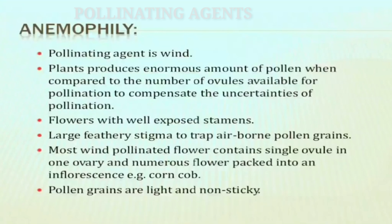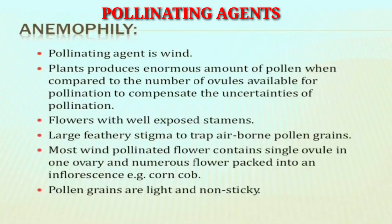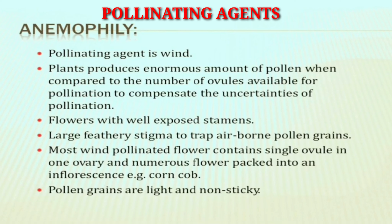The first type of abiotic pollinating agent is anemophily. Anemo means wind, so here wind is acting as a pollinating agent. In this type of pollination, the plant will produce an enormous amount of pollen grains compared to normal plants, to compensate for the wastage of pollen grains. The flowers are well exposed with stamens.